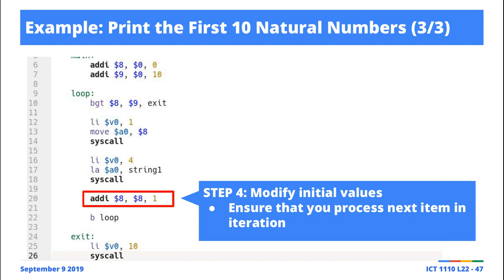You tell MIPS, or QTSPIM, in this case, say you want to print an integer. Which integer? The integer in 8. At this point, the value in 8 is 0. So you print 0. You print the carriage return.